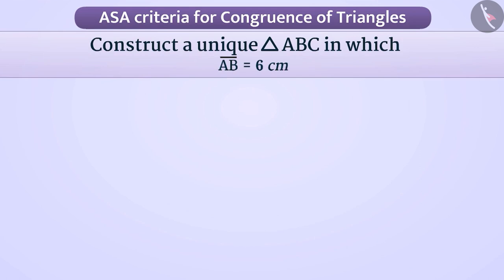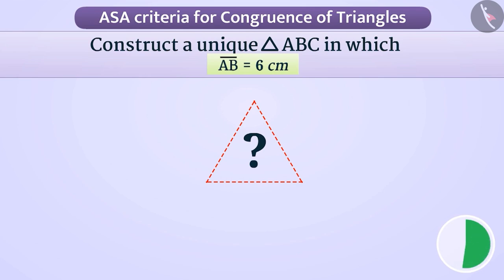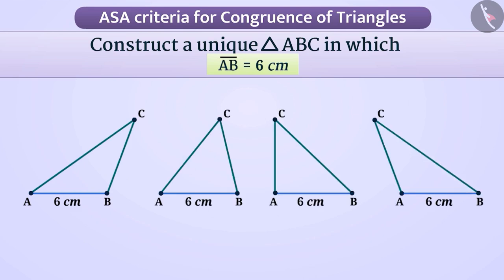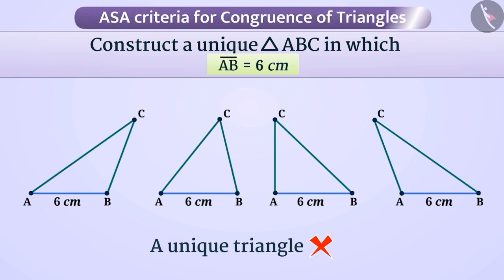Suppose we have to draw triangle ABC. If you are given the length of side AB as 6 cm, will you be able to draw a unique triangle ABC using the length of only one side? With this information, we can draw any number of triangles ABC, but it will not help us create a unique triangle.